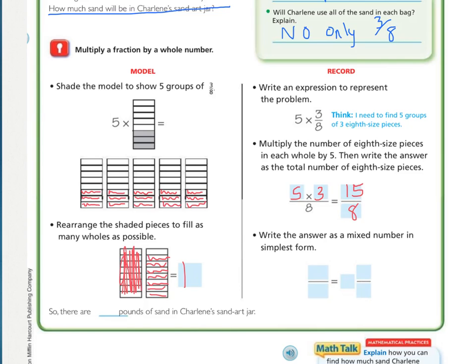So we filled in one hole, and then 7/8. And if we look right here, we have 15/8. How many 8ths are in 15? There is one. That leaves us with 7 left over, and our denominator of 8. So how many pounds of sand will be in Charlene's sand art jar? There will be 1 and 7/8 pounds.